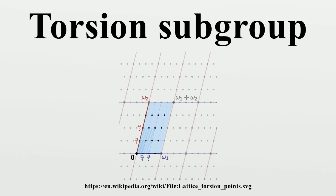The torsion elements in a nilpotent group form a normal subgroup. Obviously, every finite abelian group is a torsion group. Not every torsion group is finite, however. Consider the direct sum of a countable number of copies of the cyclic group C₂; this is a torsion group since every element has order 2. Nor need there be an upper bound on the orders of elements in a torsion group if it isn't finitely generated.